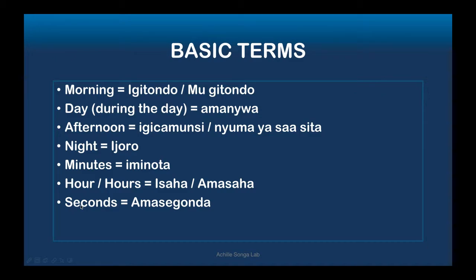And for 'second' in Kinyarwanda, we say 'isegonda.' Five seconds would be 'isegonda itanu.' That's how we say these basic time terms. You may learn more as you keep learning here on my channel, but for now let's move on.